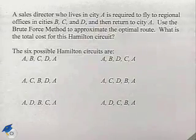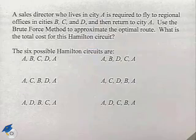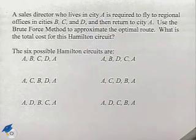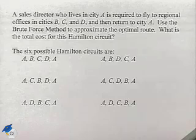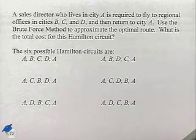A sales director who lives in City A is required to fly to regional offices in cities B, C, and D, and then return to City A. Use the brute force method to approximate the optimal route. What is the total cost for this Hamilton circuit?